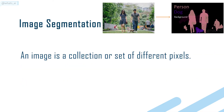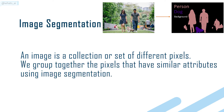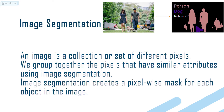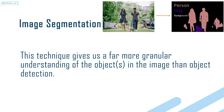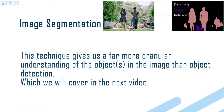An image is a collection or set of different pixels. We group together the pixels that have similar attributes using image segmentation. Image segmentation creates a pixel-wise mask for each object in the image. This technique gives us a far more granular understanding of the objects in the image than object detection, which we will cover in the next video.